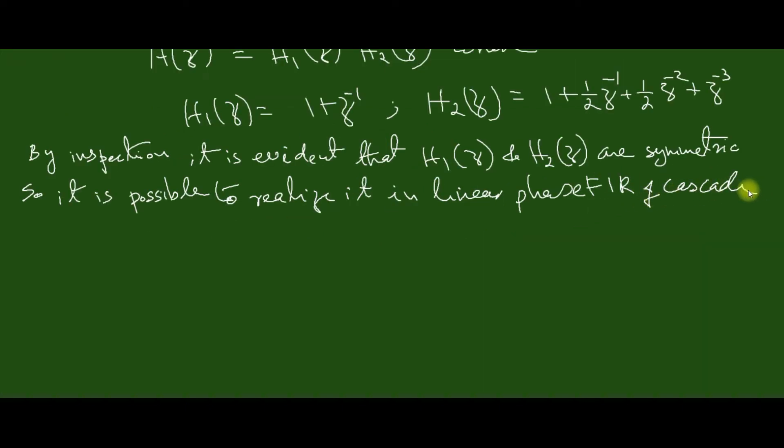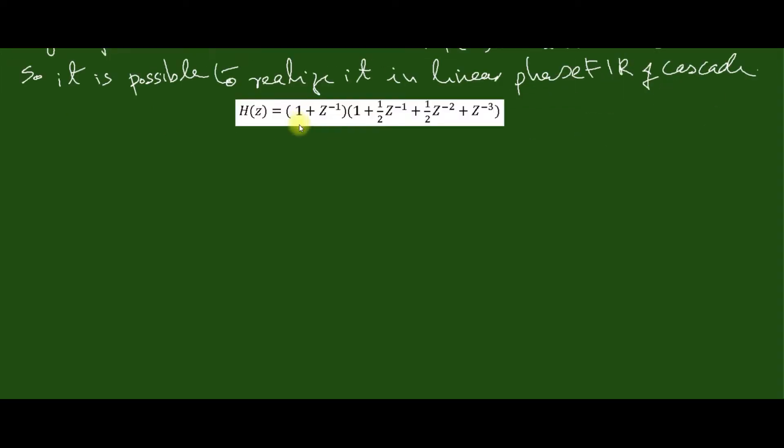Now let us realize this system function. We can realize this in a cascade form. First we can realize the H1(z). Here we can see only one delay is there, so first of all we can draw the single delay.